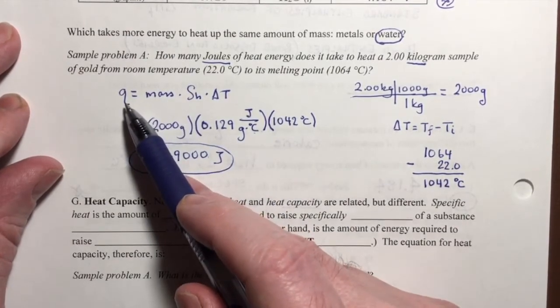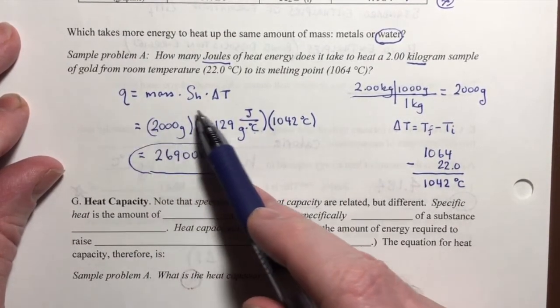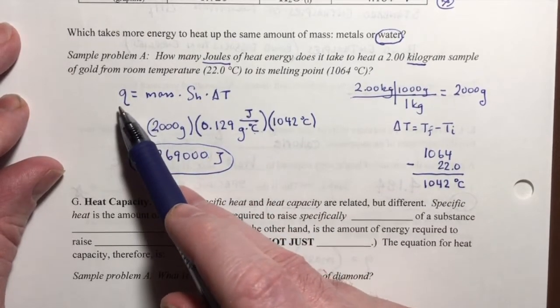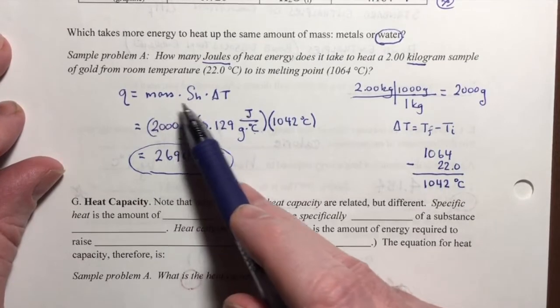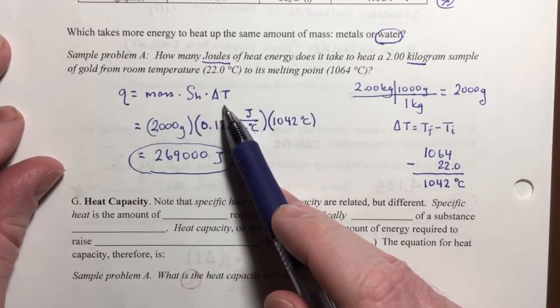In this sample problem, it was structured in a fairly straightforward way where you're calculating Q, and so you found and plugged in the mass, the specific heat, and the delta temperature.